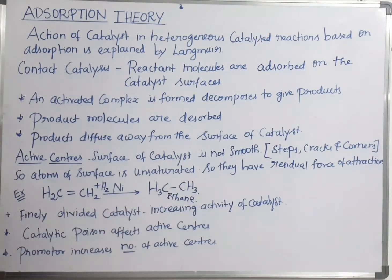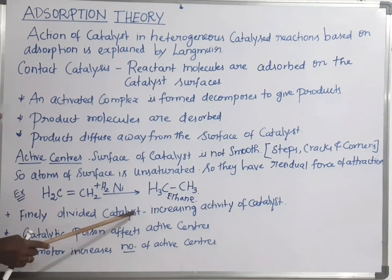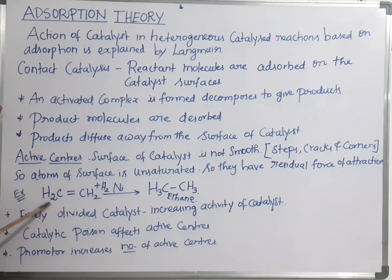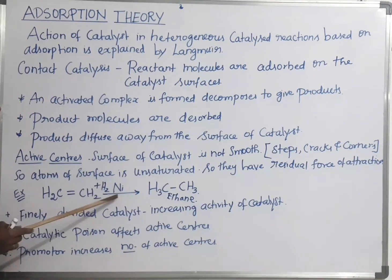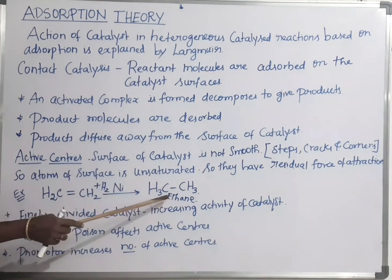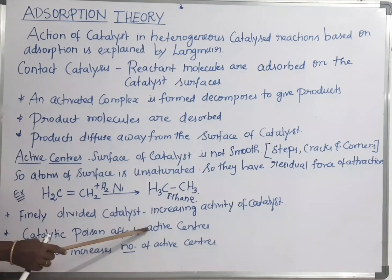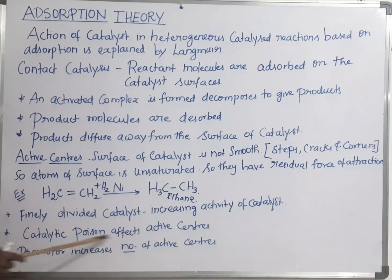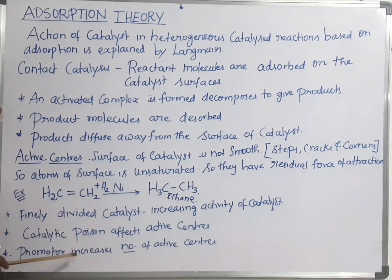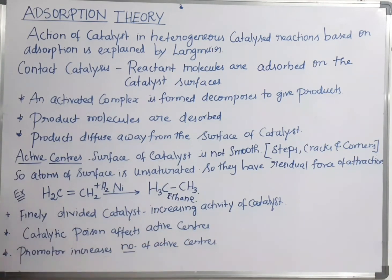So, the activity of the catalyst increases, and the rate of the reaction increases. The unsaturated reactant molecule — that is, ethylene — undergoes hydrogenation, and the pi bond breaks in the presence of the nickel catalyst, which is taken in the finely powdered form, giving the product ethane. The catalytic poison also affects the active centers. To increase the active centers, promoters or activators are used, which increase the number of active centers.